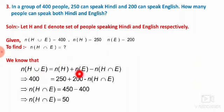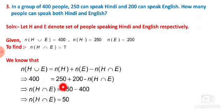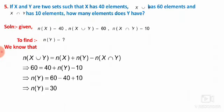Using N of H union E equals N of H plus N of E minus N of H intersection E: 400 equals 250 plus 200 minus N of H intersection E. Rearranging: N of H intersection E equals 250 plus 200 minus 400 equals 450 minus 400 equals 50. Therefore 50 people speak both Hindi and English. These questions are expected in the examination for 2–3 marks.